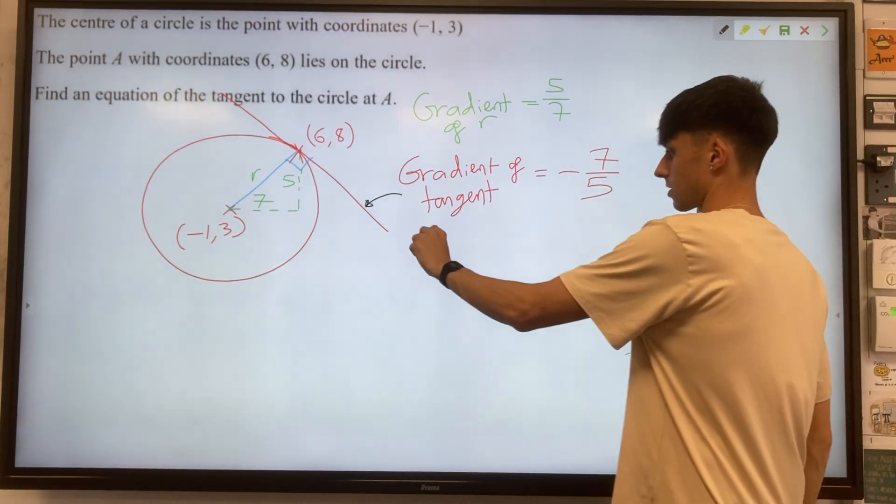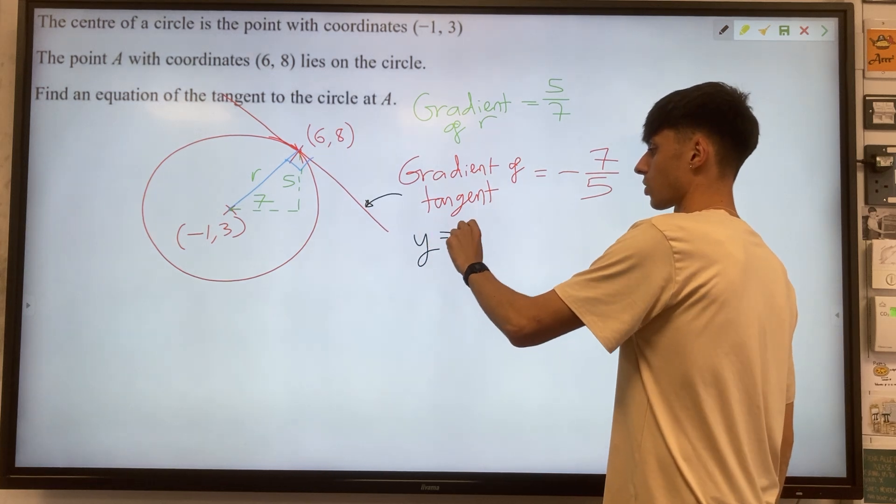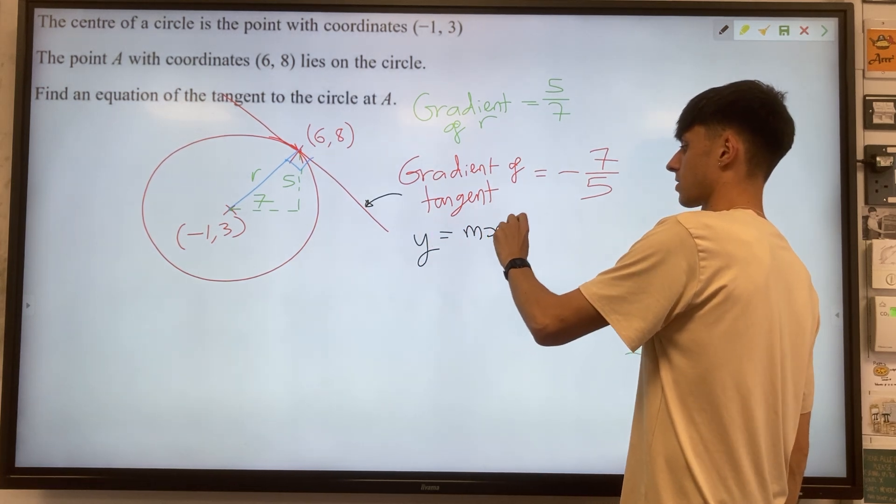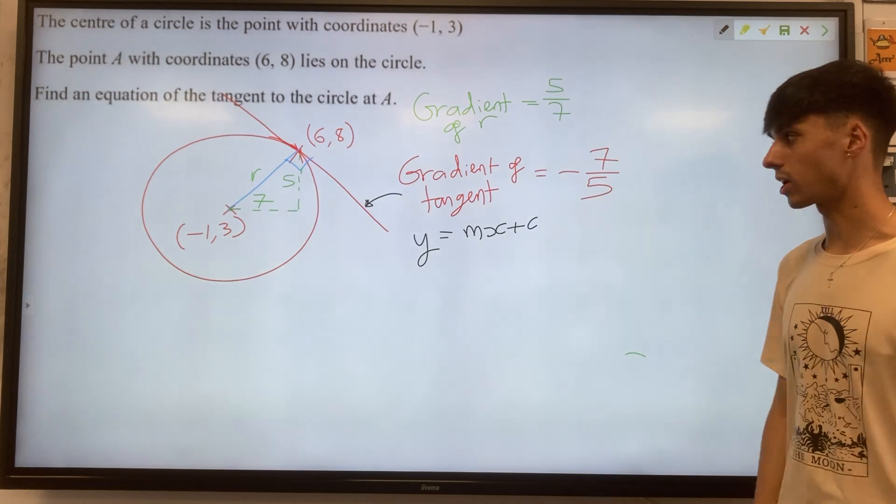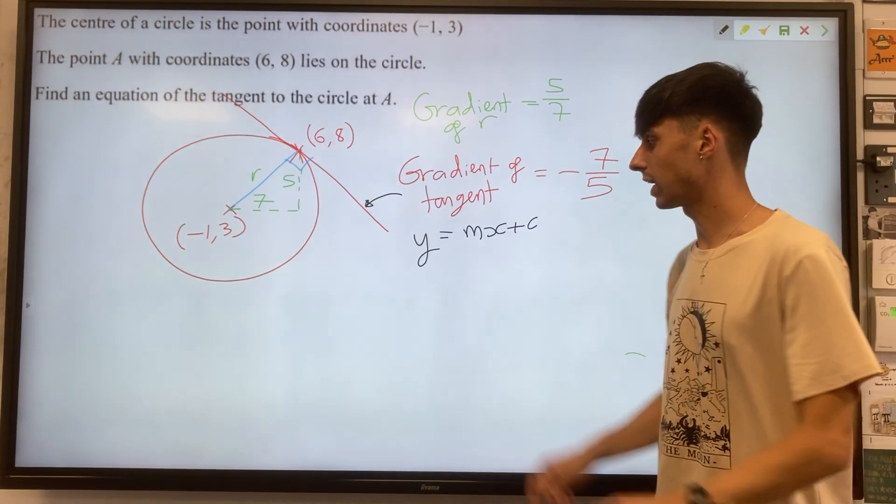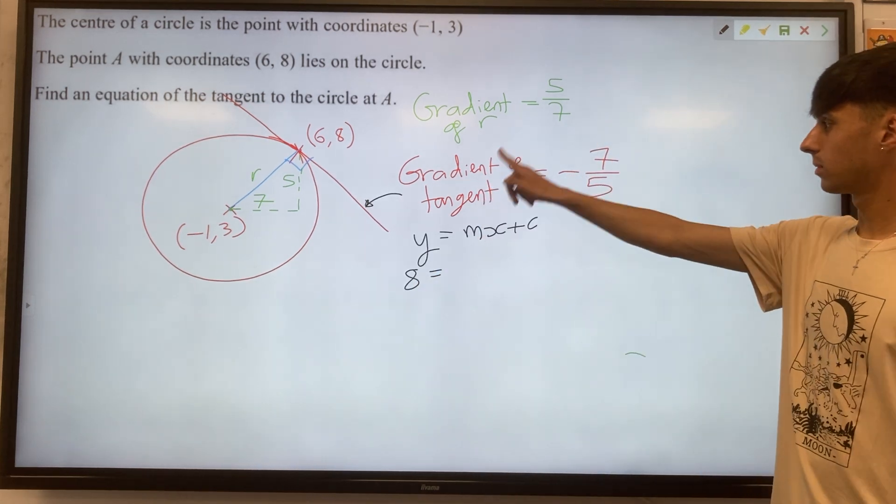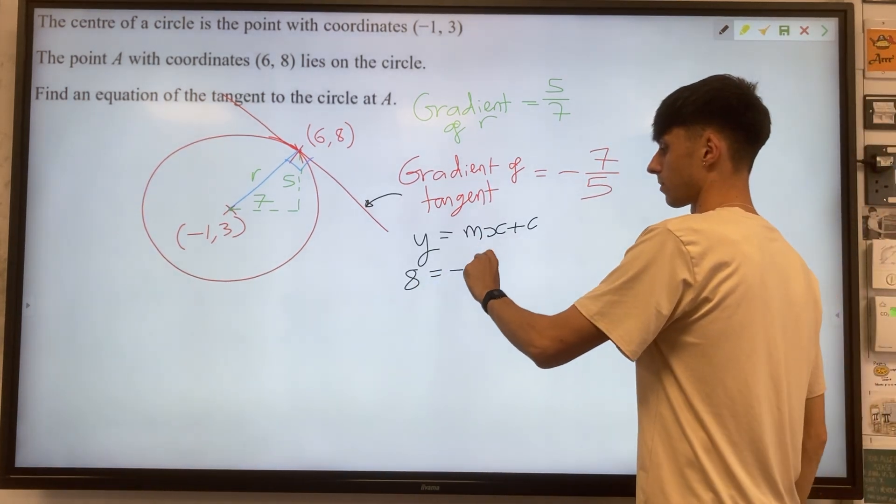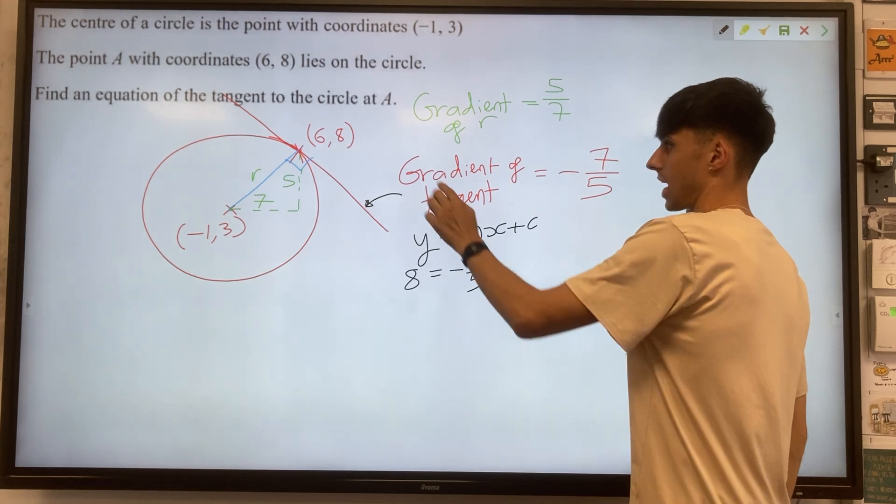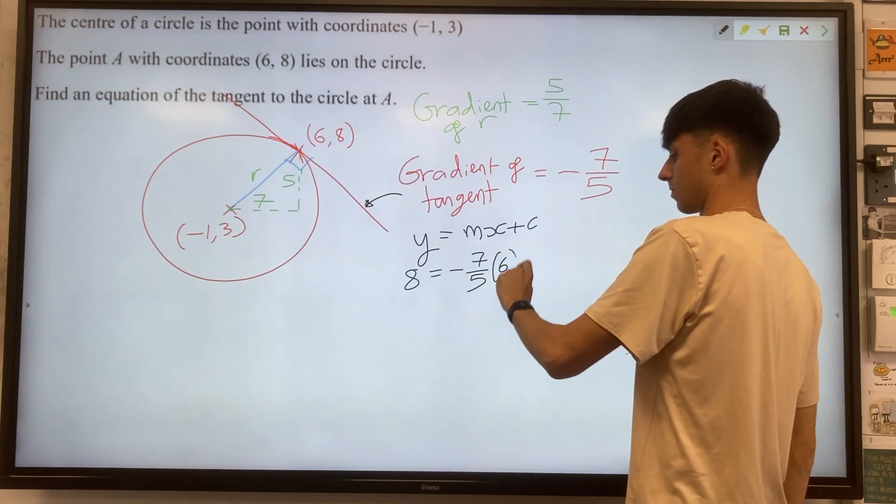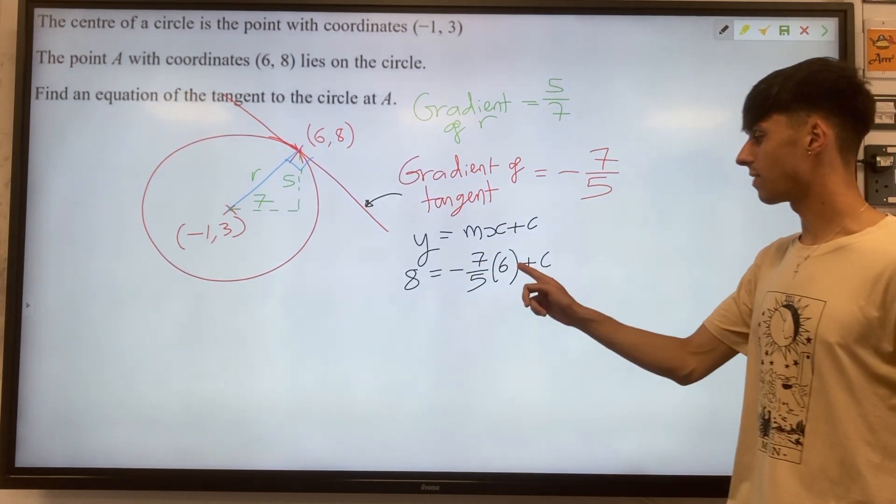So the way that we do this is we know it must look like y equals mx plus c, because it's a straight line. We can substitute in our value of y, which was 8. Our m is minus 7 over 5. And our x is 6.